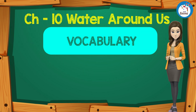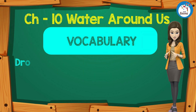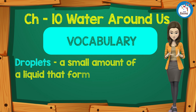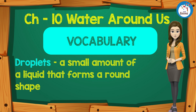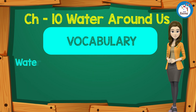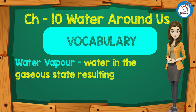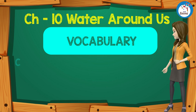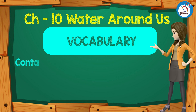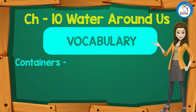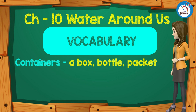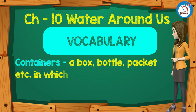Vocabulary: Droplets — a small amount of liquid that forms a round shape. Water vapor — water in its gaseous state resulting from heating water or ice. Containers — a box, bottle, packet, etc., in which something is kept.